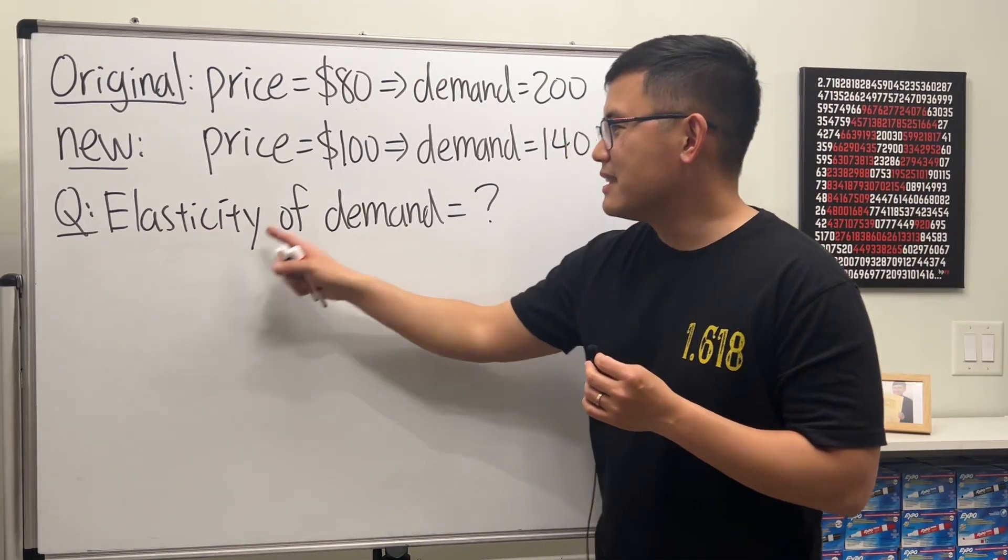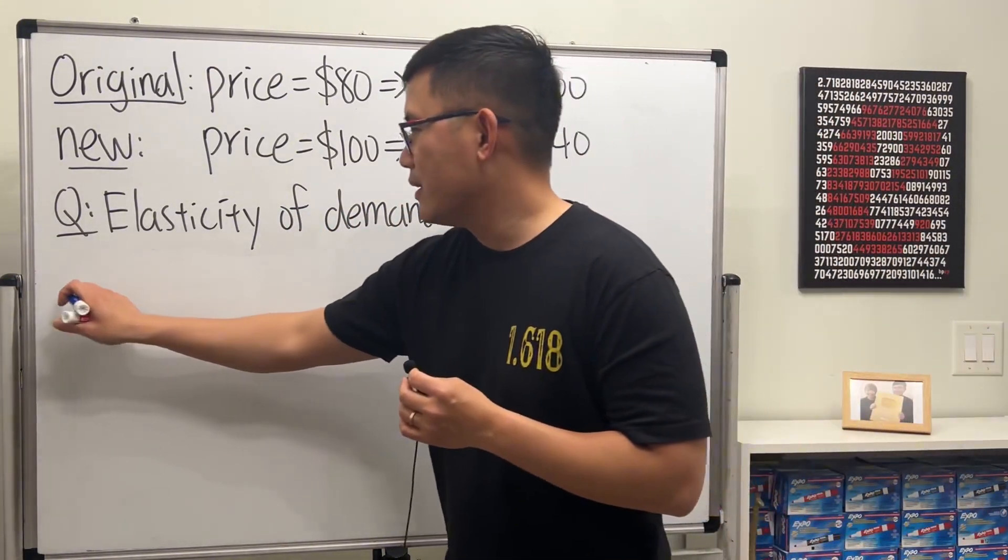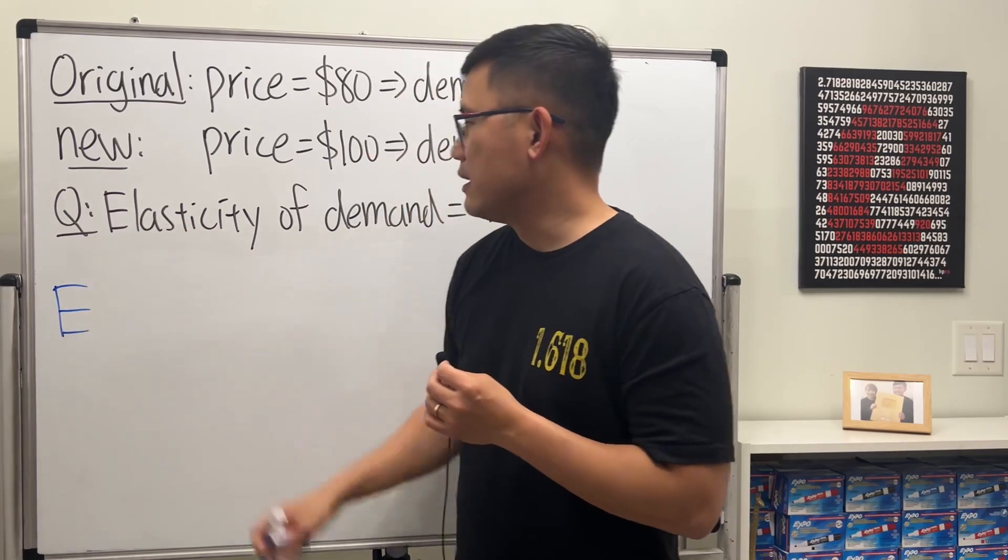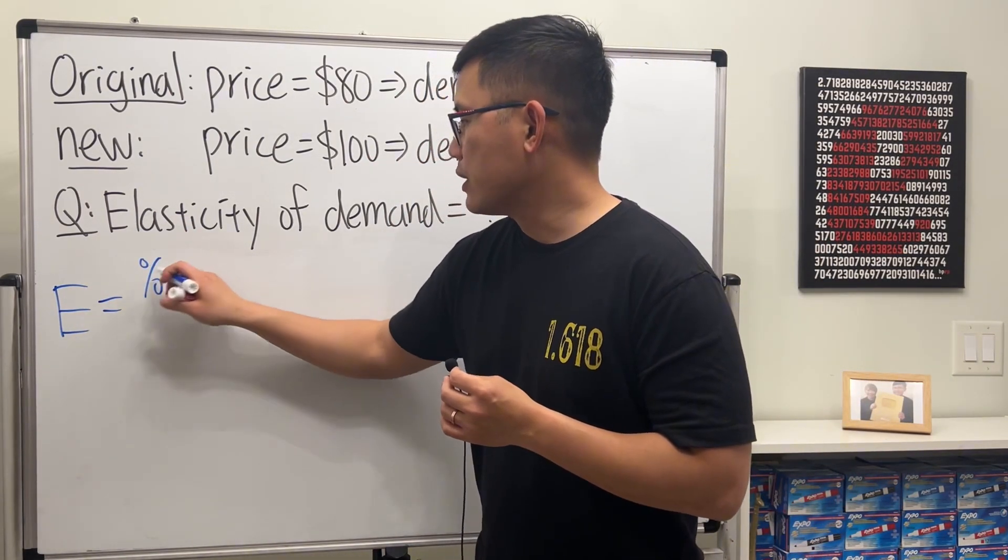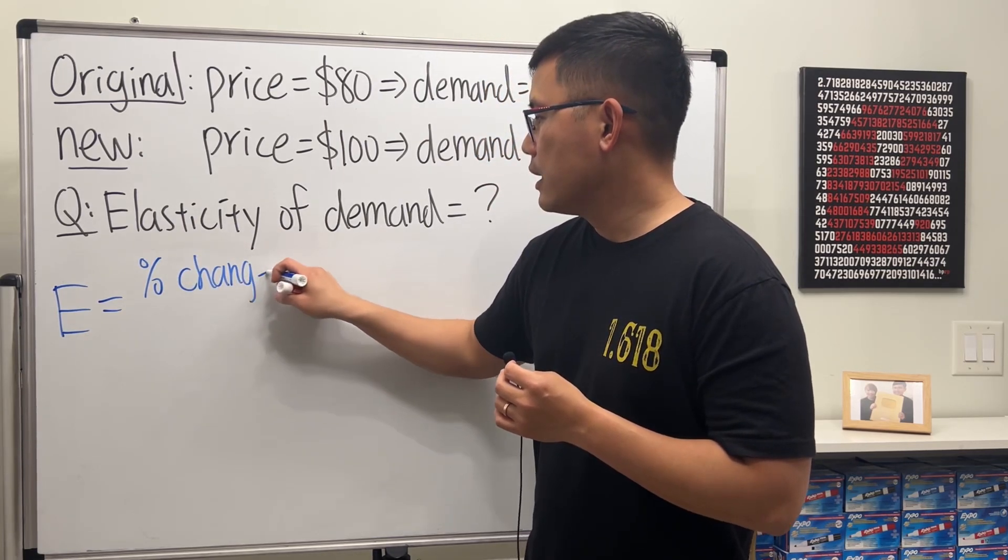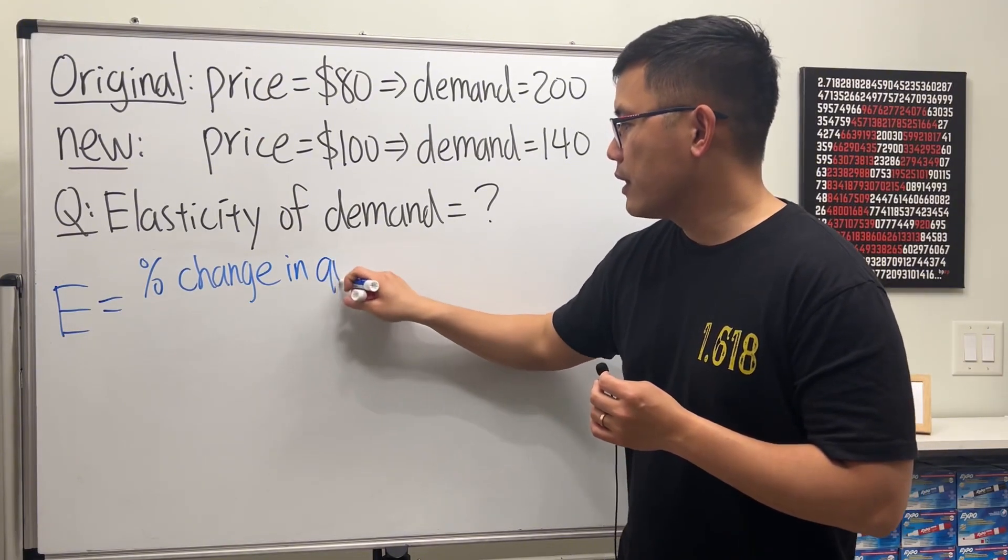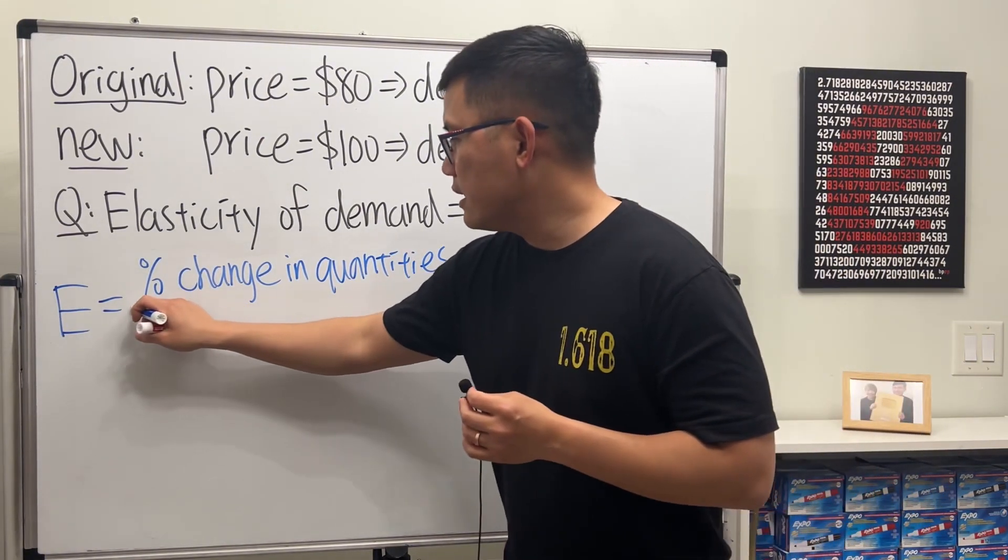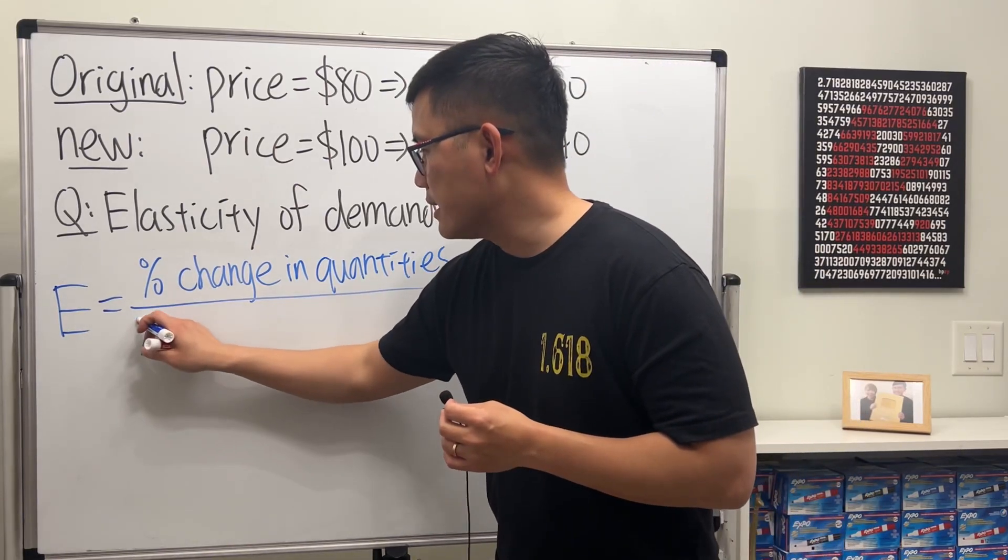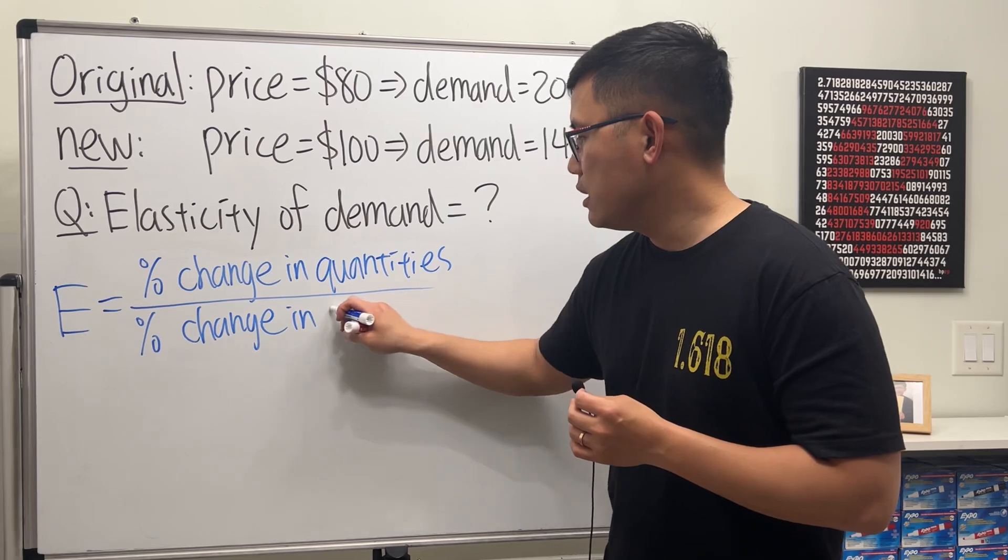To do this, capital E for the elasticity is defined to be the percentage change in the quantity, which is the demand right here, divided by the percentage change in the price.